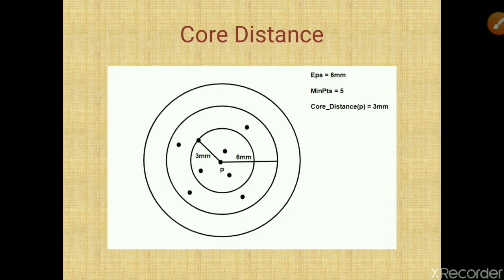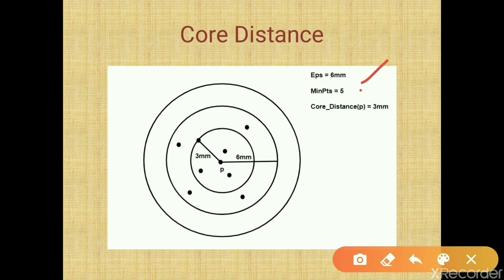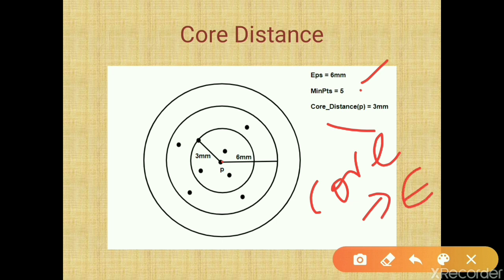Now consider this example with point p, where epsilon is given as 6 and minimum points is given as 5. To find the core distance, point p must first be a core object. A core object must have at least the minimum number of points within the radius epsilon. Looking at p within radius 6, we count 1, 2, 3, 4, 5 points — yes, 5 points are there, so p is a core point.